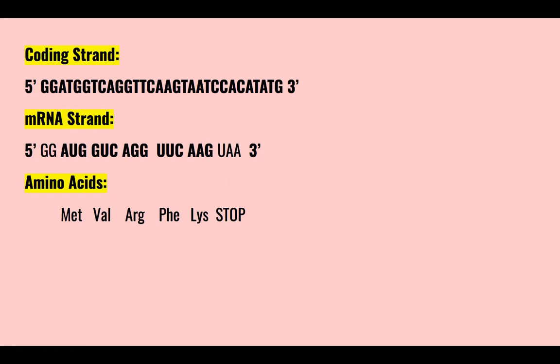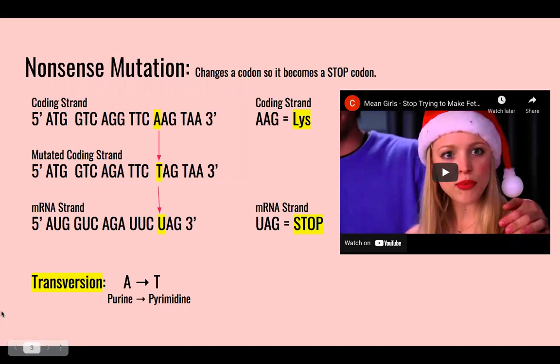We have four different mutations, but we'll begin with a nonsense mutation, which changes the codon so that it becomes a stop codon. In this case, the A in AAG is changed to T, which in the mRNA strand becomes U and codes for UAG, which is a stop codon.